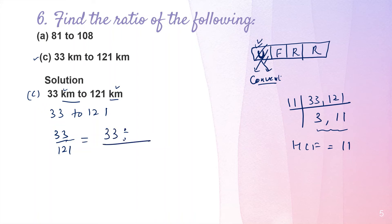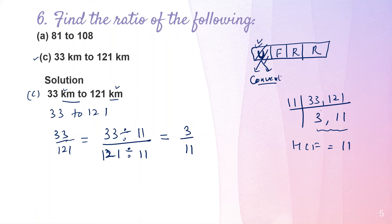Dividing numerator and denominator by the HCF of 11 gives 3 upon 11. This is the lowest term. The final step is to write the answer as a ratio, so the final answer is 3:11.